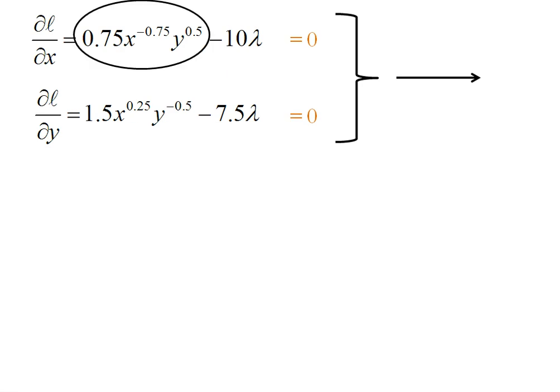I'm going to take the first portion, the 0.75x^(-0.75)y^0.5, and recopy it. I'm just putting a little note here is where I would do this if I had a piece of paper, but I don't have room on my slide. The negative 10λ, I'm going to add to the right-hand side where that 0 is. So I've just rearranged the top equation.